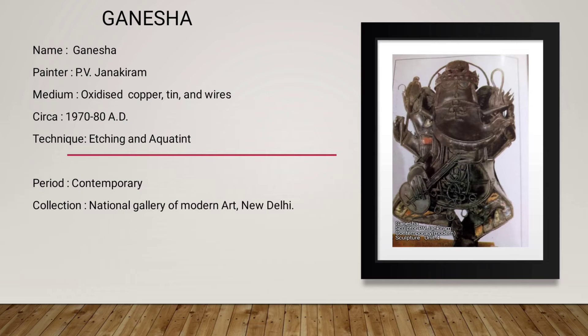Our last sculpture is Ganesha, by the artist P.V. Janakiram. It is made from medium oxidized copper tin and wire. It is made from 1970 to 80 AD. The technique is etching and casting. Period: contemporary. Collection: National Gallery of Modern Art, New Delhi. In the description, P.V. Janakiram gave a beautiful shape of a six-handed dancing Ganesha. They are playing with two hands; the other four hands hold a wheel, mace, lotus and conch. This is inspired from South India. It is a traditional idol, and you can see Ganesha's traditional art with modernity and mobility reflected in the artwork.